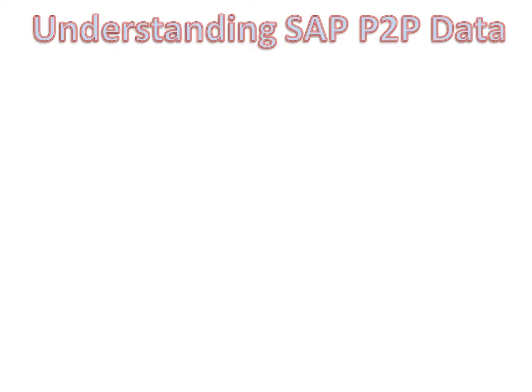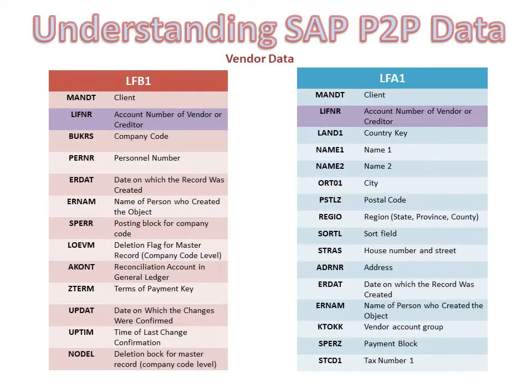Let's dive briefly into SAP tables before going to the process model. Remember, this is not an exhaustive list — the fields and columns keep on changing slightly from company to company, but these are what we will definitely find in all places. Vendor master data resides in LFA1 and LFB1 tables and is joined using a common key called LIFNR, that is, the vendor number.